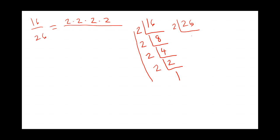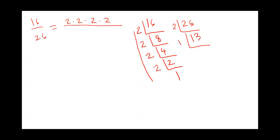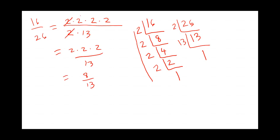Looking through the list of primes — 2, 3, 5, 7, 11, 13 — I see 13 is a prime, so I'm done. I write 13 and 1. The prime factors in the denominator are 2 times 13. Now I look in the top and bottom for any common factors to cancel. There's a 2 in both — those are the only two common factors.